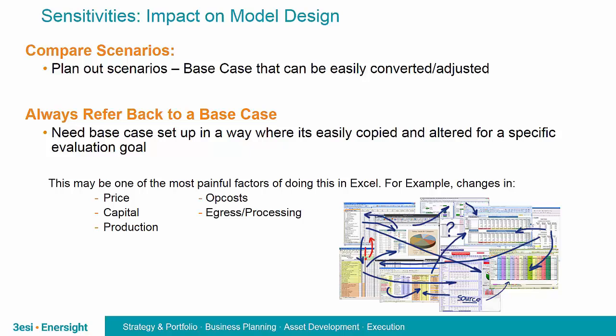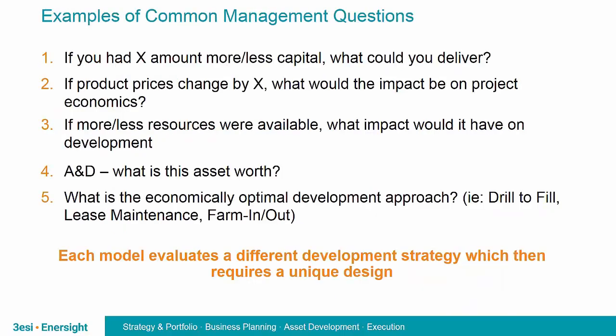Considering different scenarios has a major impact on your model design, particularly how you need to build a base case. A base case must be easily configurable, easily copied and altered — this is often what's difficult to do in Excel. Scenarios should be easily compared back to the base case to see differences in economics, production, schedule, etc. Most common sensitivities include changes in price, changes in capital, production changes, op costs, and egress or processing. Your planning solution must be set up to easily control these variables and generate results quickly and as painlessly as possible.